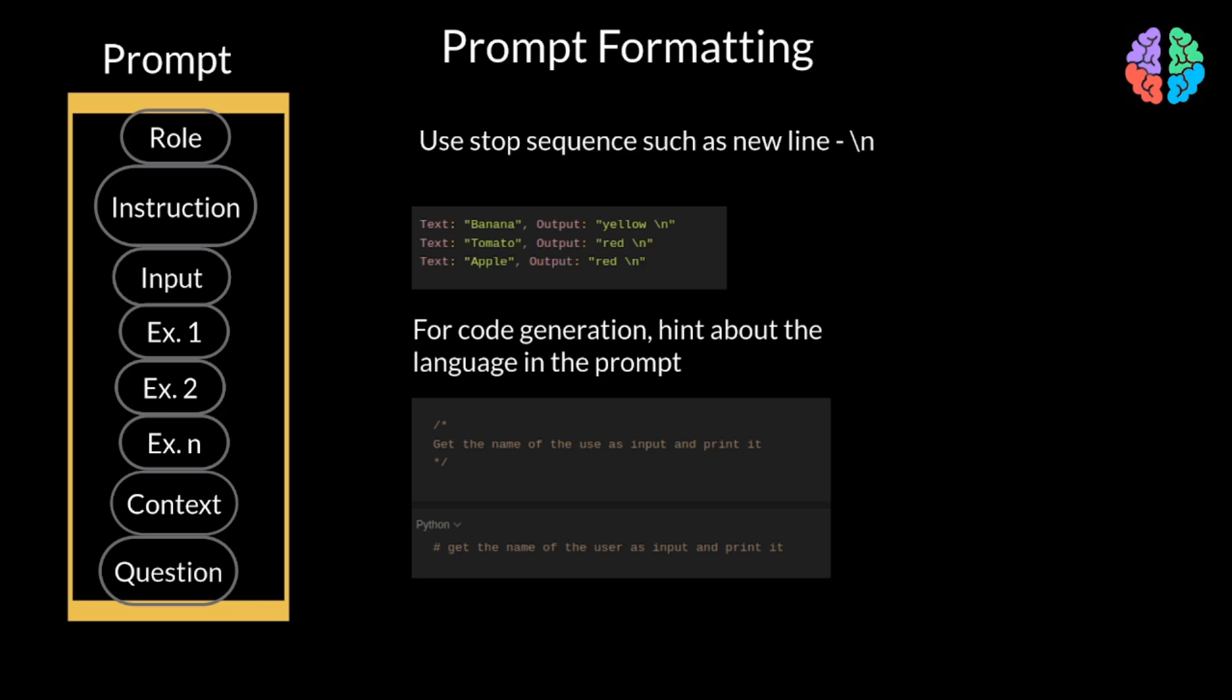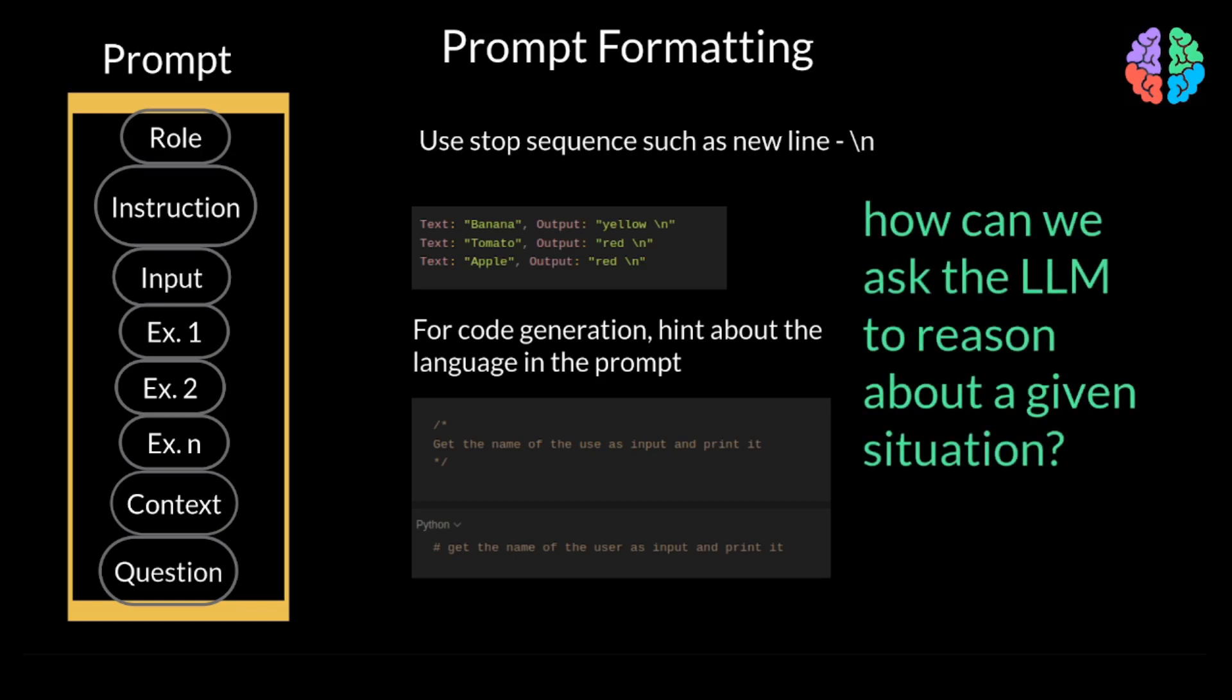Now, with all that introduction about prompts, prompt engineering, and their types, we have only scratched the surface here. For example, how can we ask the LLM to reason about a given situation? So, there are more advanced ways to prompt like chain of thought, self-consistency, general knowledge, etc. If you stay tuned, I'm going to literally continue this video series with those prompting techniques. So I'll see you in my next one then. Bye.